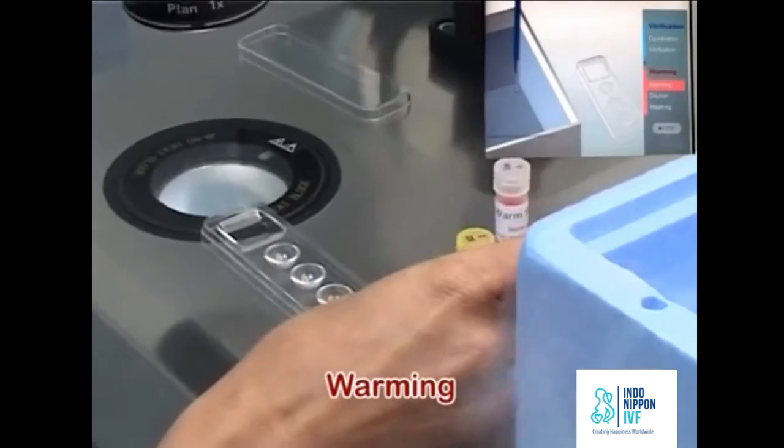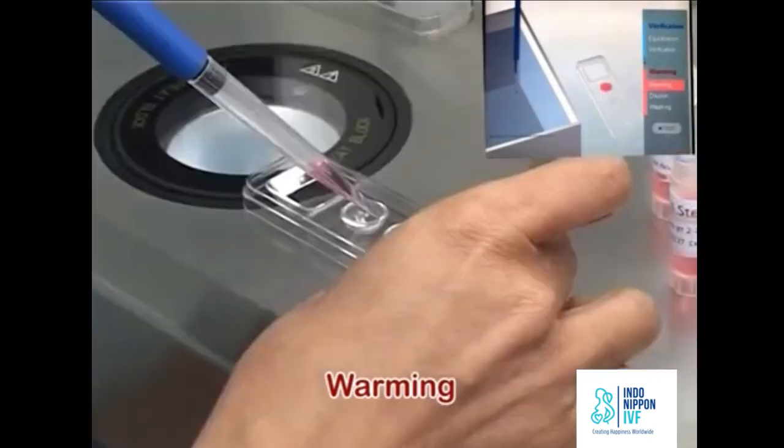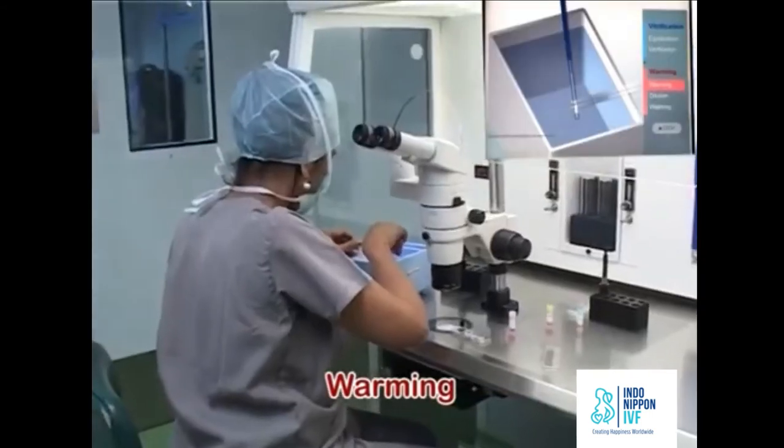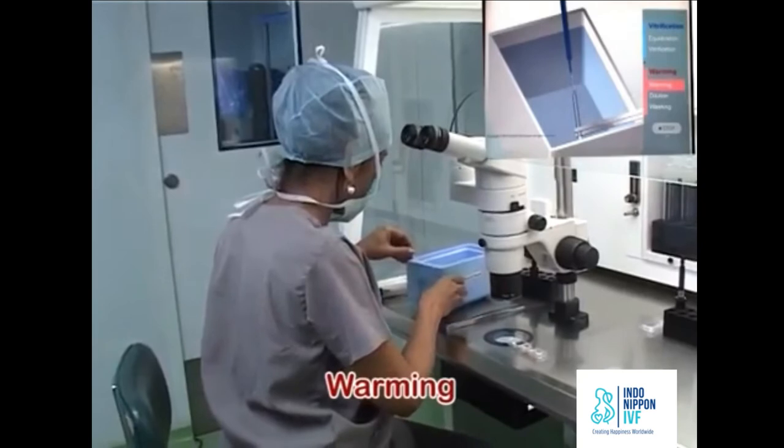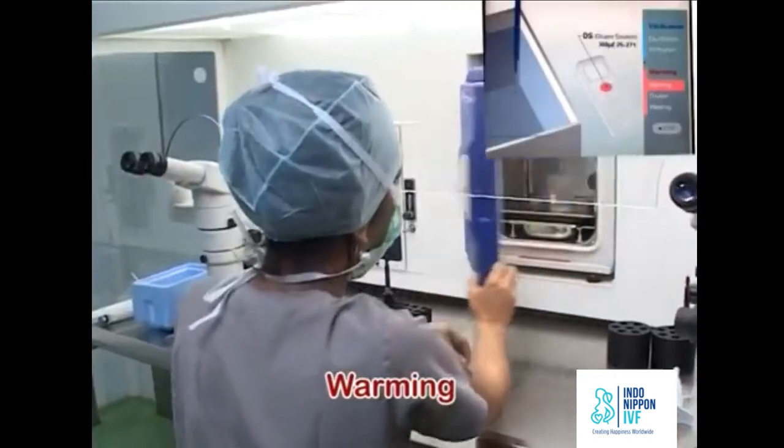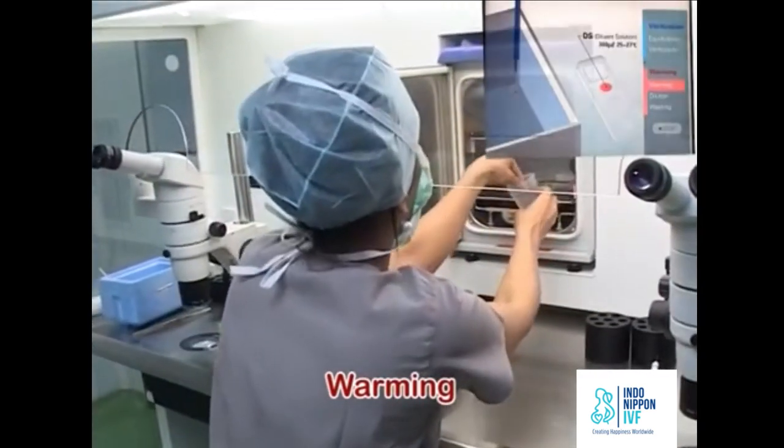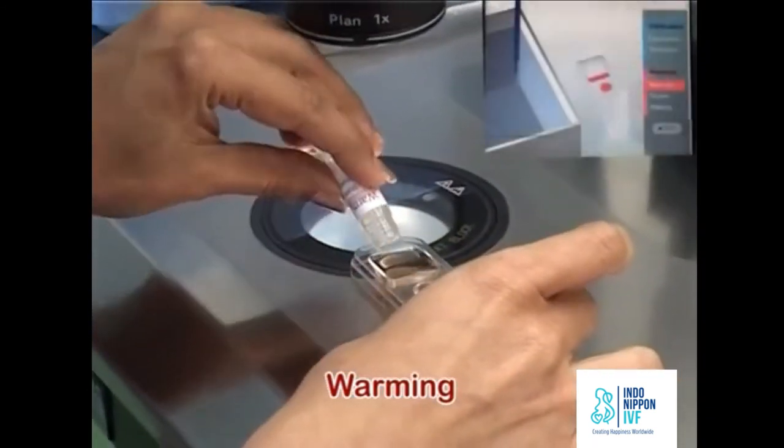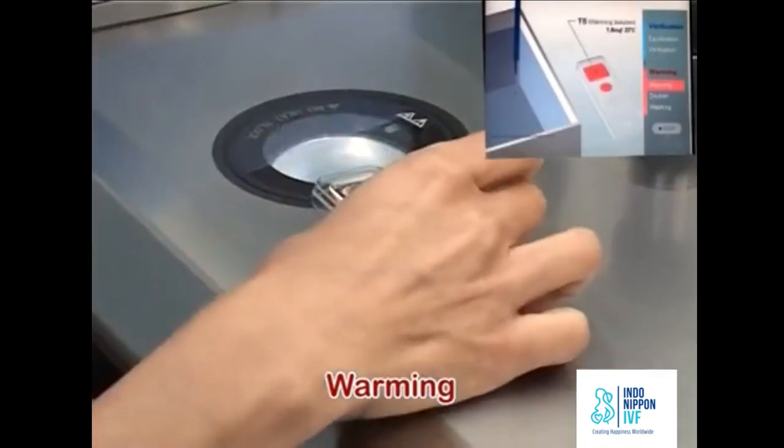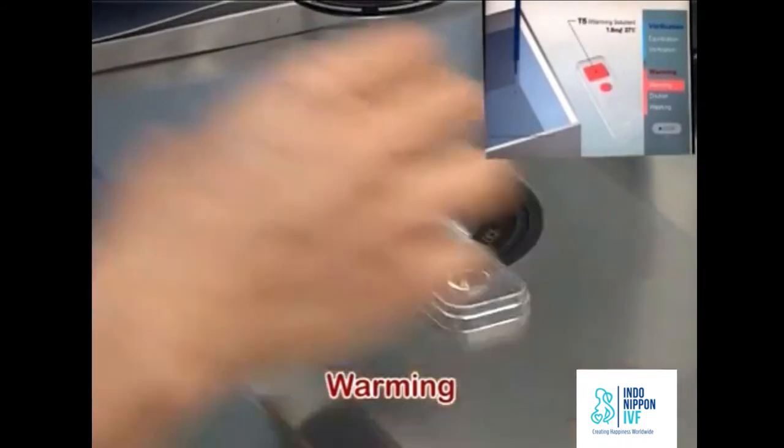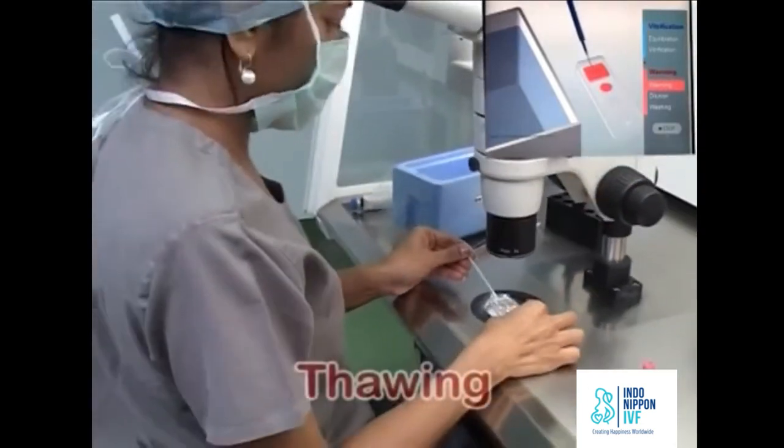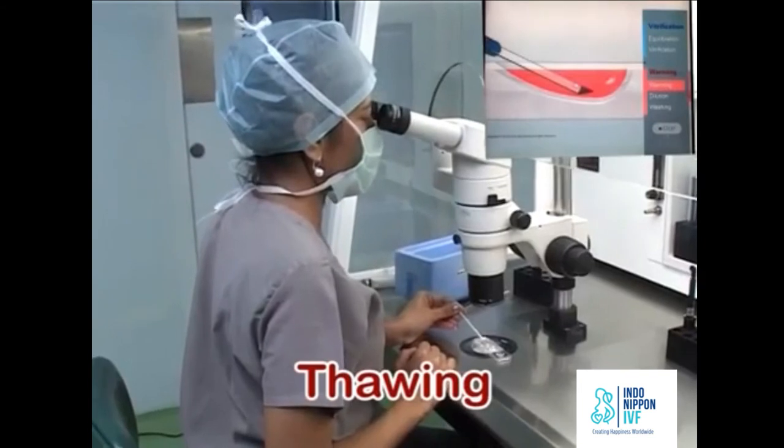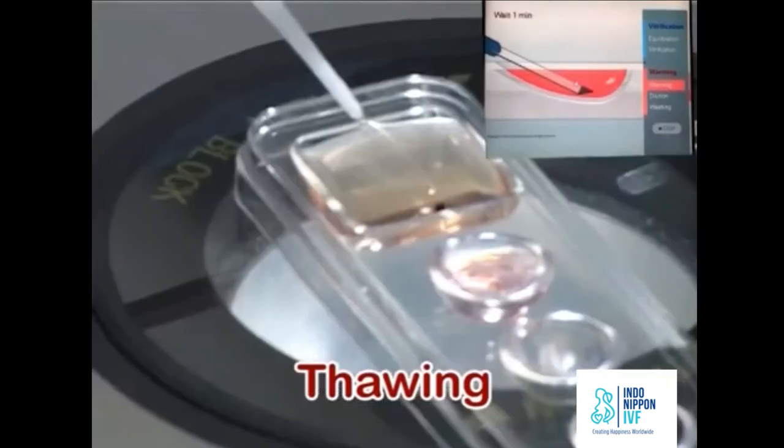Fill the DS well with 300 microliters of dilution solution. Carefully twist and remove the screw cap of the cryotech into liquid nitrogen. Take TS out of the incubator. Gently invert the TS vial to mix and fill the rectangular well with 1.8 ml of TS. Quickly immerse the cryotech into TS well within 1 second. This step is extremely crucial to achieve high warming rates. Start the stopwatch for 1 minute.